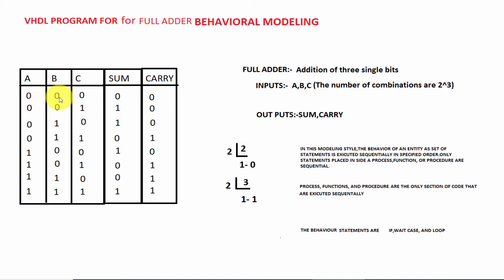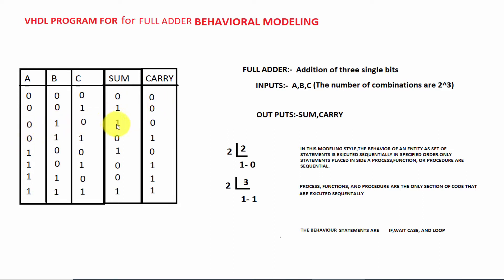For 0 plus 0 plus 0, the sum is 0 and carry is 0. Next, for 0 plus 0 plus 1: 0 plus 0 is 0, and 0 plus 1 is 1, so sum is 1 and carry is 0. Next, 0 plus 1 is 1, and 1 plus 0 is 1. There is no carry.